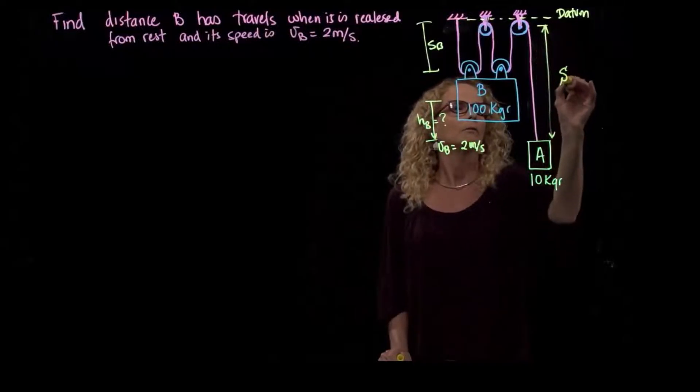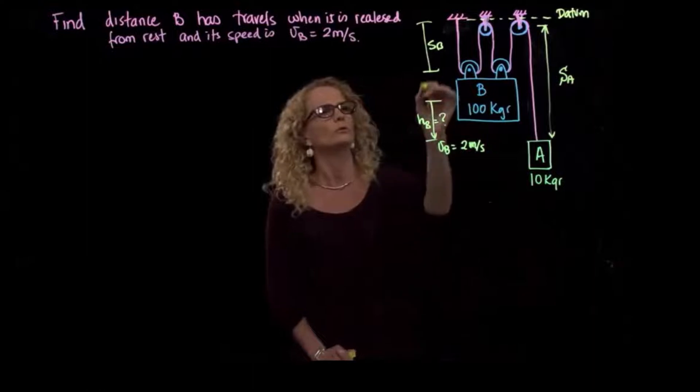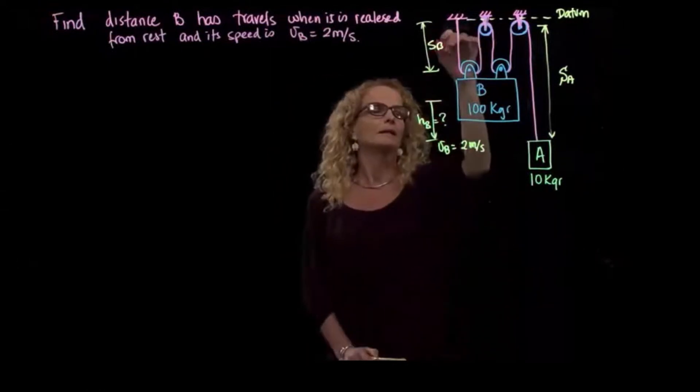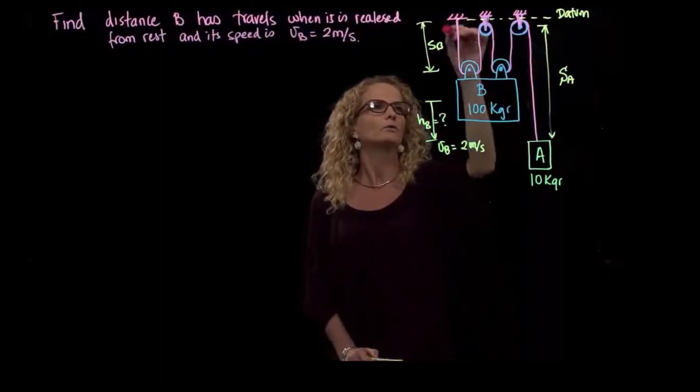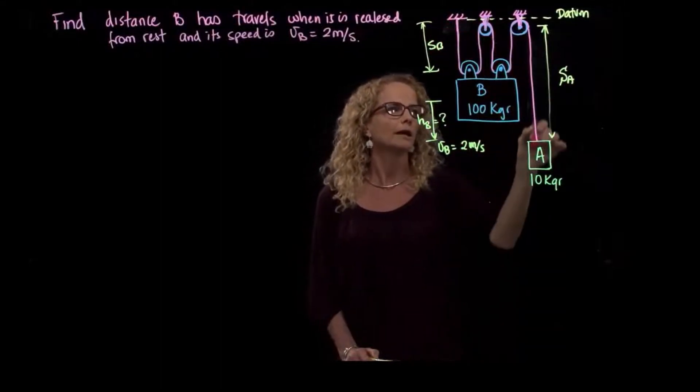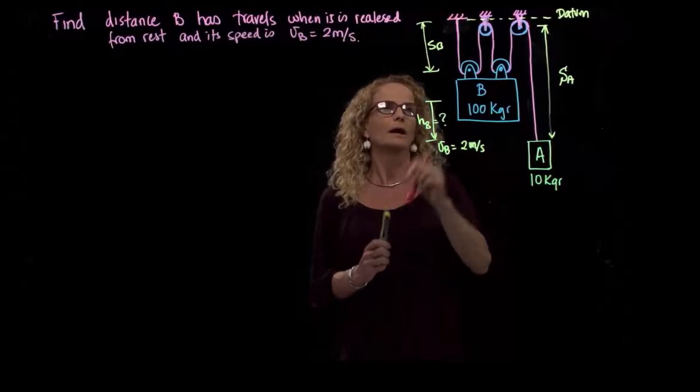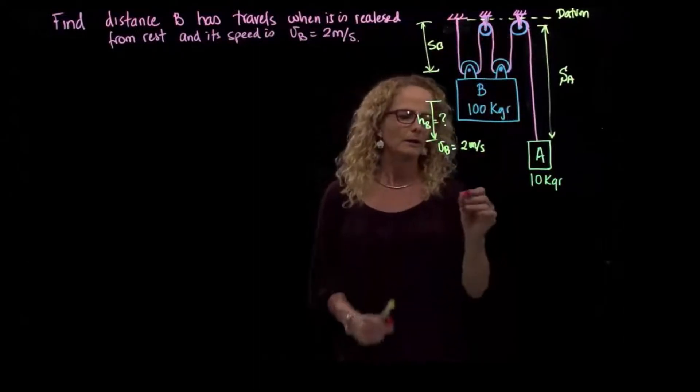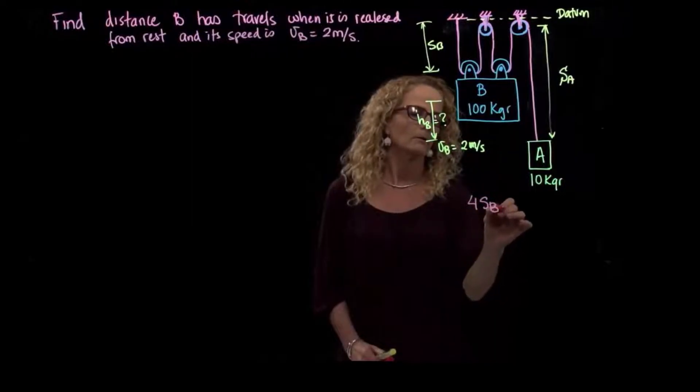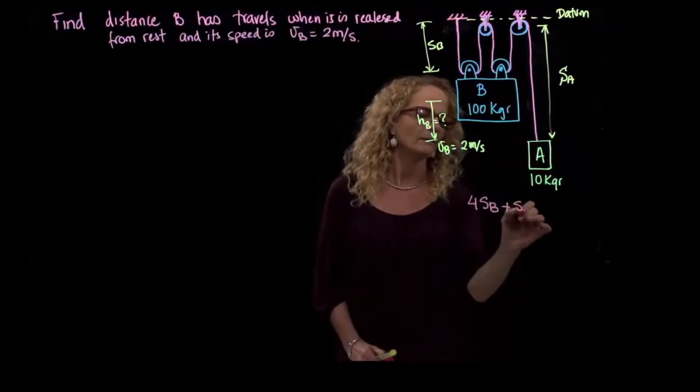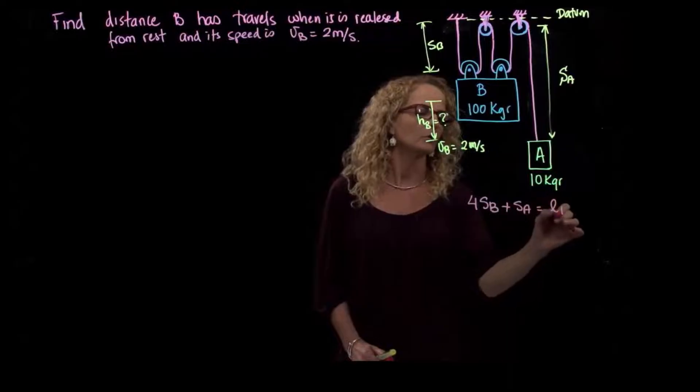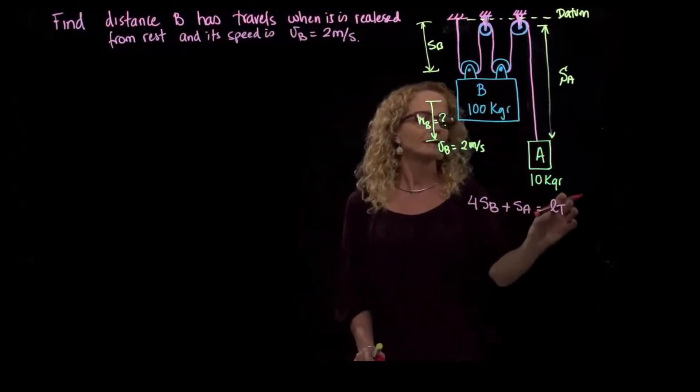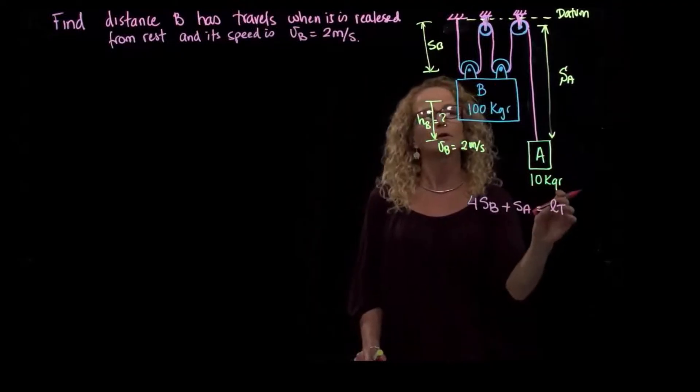And then let's call this SA. That's how we learn how to relate both variables. And if we want to relate these two variables for the whole string which is connected, we see here that we have 1, 2, 3, 4, SB, plus 1 SA is equal to the total string. Since the string is a constant, the length of the string is a constant,